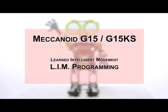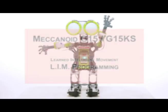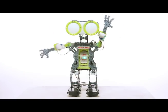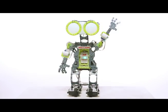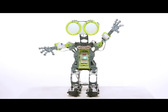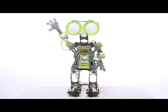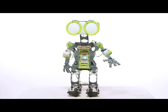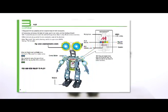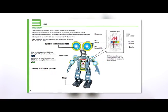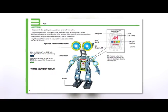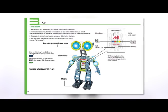You can program Mechanoid in three innovative ways. In this video, you'll learn about LIM programming. LIM stands for Learned Intelligent Movement, and you can access LIM through the robot's mechabrain.